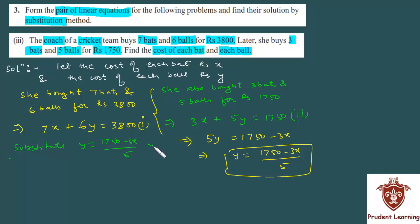Substituting y in equation 1 we will get: substitute y equals (1750 minus 3x) over 5 into equation 1. We get 7x plus 6y, and in place of y we put (1750 minus 3x) over 5, equals 3800.